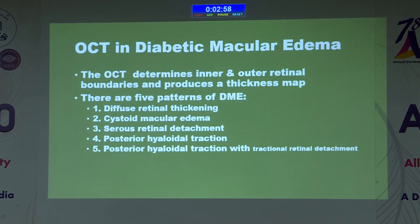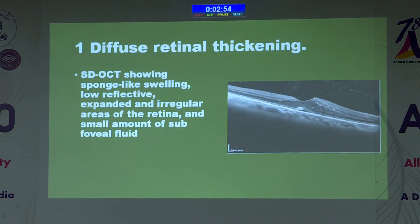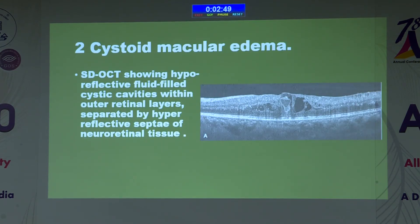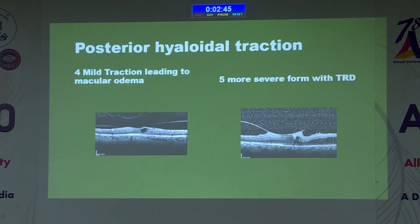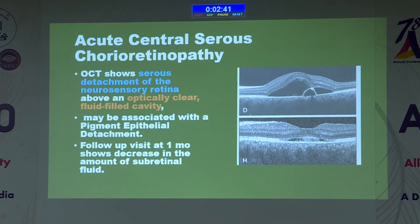Five patterns of diabetic macular edema are seen on OCT. These are: diffuse retinal thickening, cystoid macular edema, serous retinal detachment, posterior hyaloid traction without TRD, and with TRD.